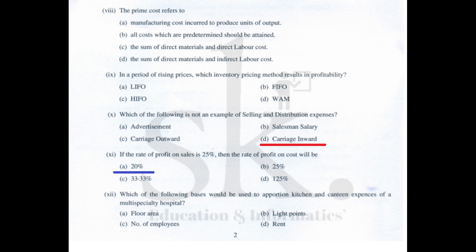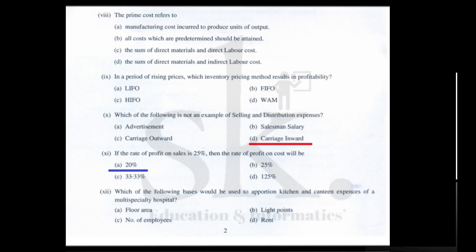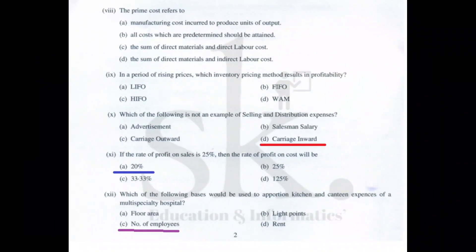Question number twelve: which basis is used for apportionment of kitchen and canteen expenses of a multi-speciality hospital — the cost should be apportioned based on the number of employees working in the organization. The correct option is C. This concludes the 2018 question paper.